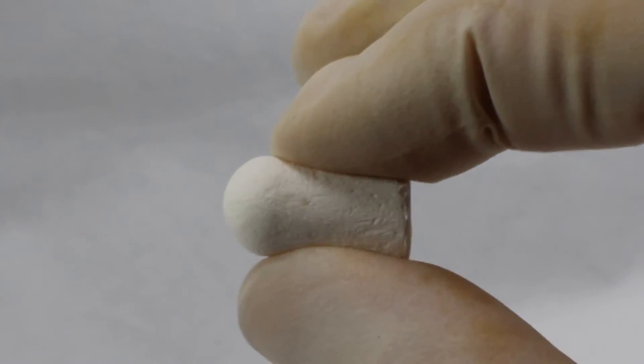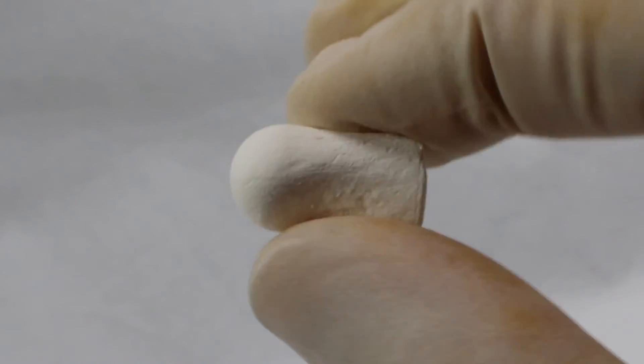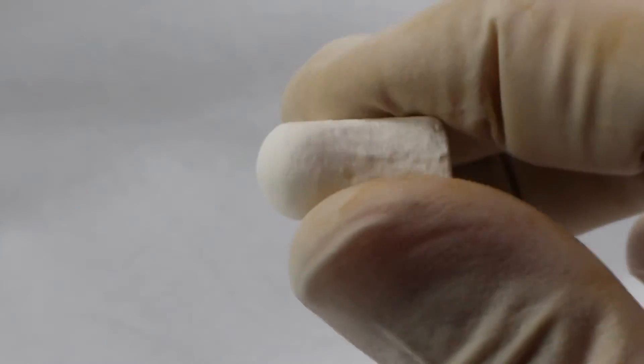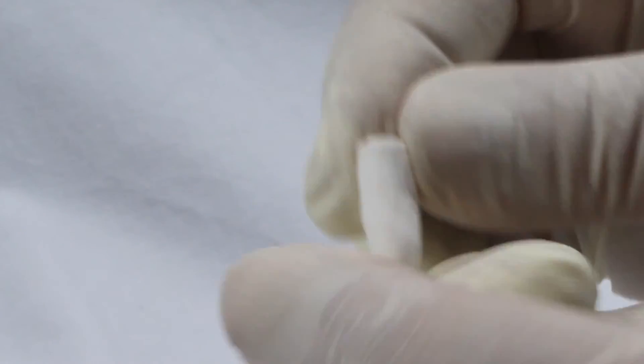As demonstrated here, the dry Osteogen Plug is firm yet remains malleable and can be shaped prior to placement. Here this clinician is rolling the plug in order to taper it apically to mimic the shape of a tooth root.